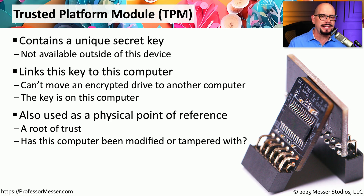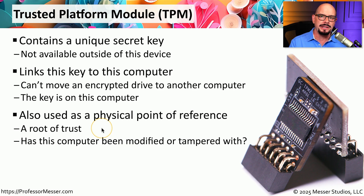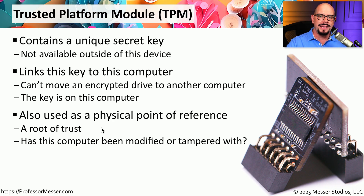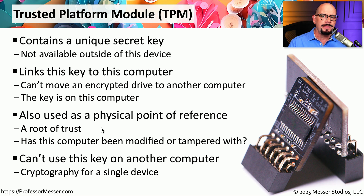Since the TPM contains a unique key tied to its piece of hardware, we can associate the hardware with the TPM. We refer to this as a root of trust — we know that TPM is unique to that system. We can use the TPM to verify that a computer we're referencing across the network really is the device we're expecting. The TPM can also be used to remotely determine if anything has changed with that computer. And since the TPM is physically part of the hardware, it can't easily be copied and moved to another computer.